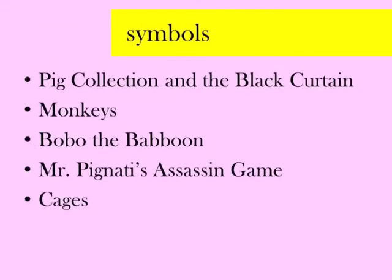Usually a symbol is talking about something deeper than what it seems. When we are reading this novel, time and again I will remind you to focus on these five things as they come up in the story. Whenever you see them, it's very important to make note of them, because these five things are symbols.